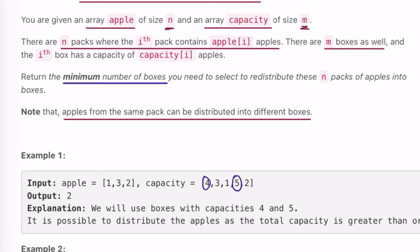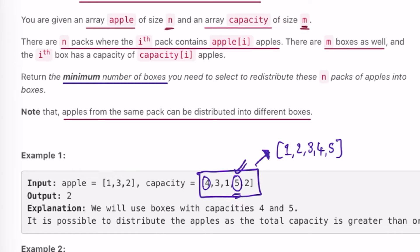We know the capacity of each box, so we should start with the maximum capacity box so it holds the maximum number of apples. The capacity array is not in sorted order, so it's important to sort it in ascending order. After sorting, the array looks like [1, 2, 3, 4, 5], and the max capacity box is at the last index. Since apples can be redistributed freely, we just need the total sum of apples — which is six.